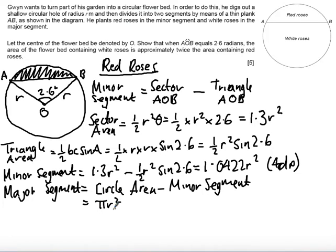And actually this can be worked out quite quickly because the circle area is just going to be pi R squared. I don't actually know what R is. And so if I do pi R squared take away the minor segment area, which is 1.0422 R squared...